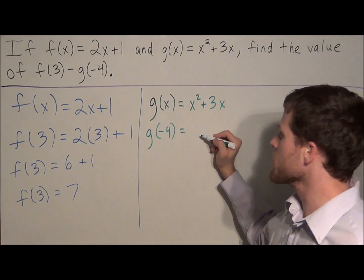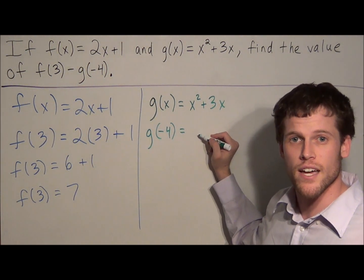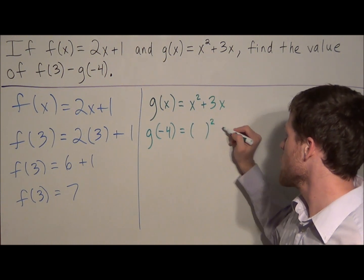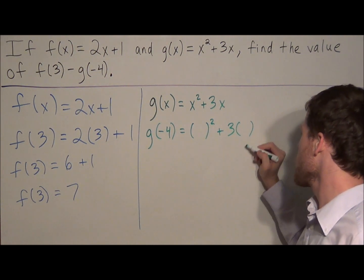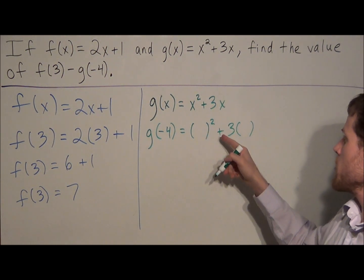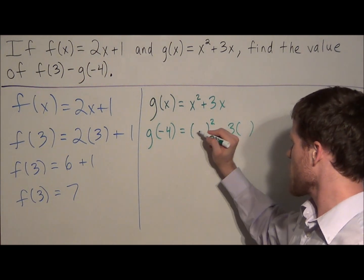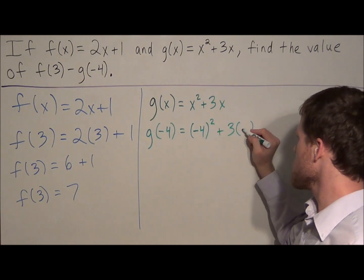So we go to the right of the equal sign, and anytime we see an x, we're going to write a blank pair of parentheses. So notice how we set this up, that we write blank squared plus 3 times blank. So now all we have to do is write a negative 4 wherever we see a blank.